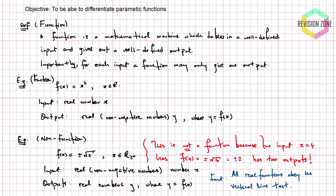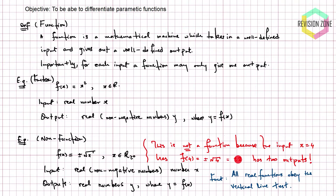Now let's consider a non-example of a function. This is a non-function: if we put a positive number in and square root it, the square root can be either positive or negative — both. This is most certainly not a function. If we put 4 in and square root it, we get +2 and −2, which are two outputs, violating the definition of a function. So even though it may look like a function, it's not.